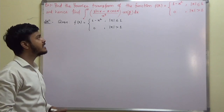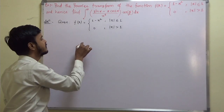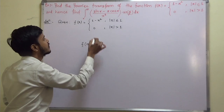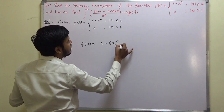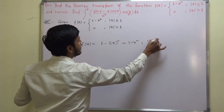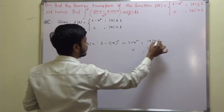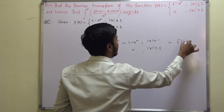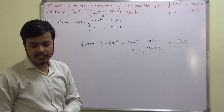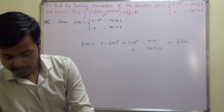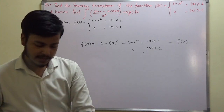After writing down the given function, we can see that f(x) is an even function. How can we say that? It is even because if you substitute x by minus x, you get one minus (minus x) squared, which is one minus x squared for mod of x less than or equal to one, and zero for mod of x greater than or equal to one. This is the same as f(x), so if f(minus x) equals f(x), the function is even.